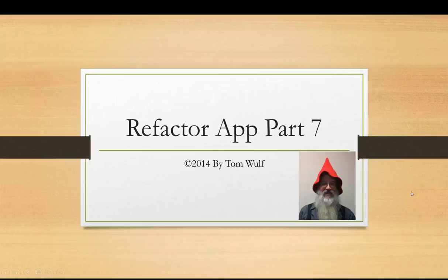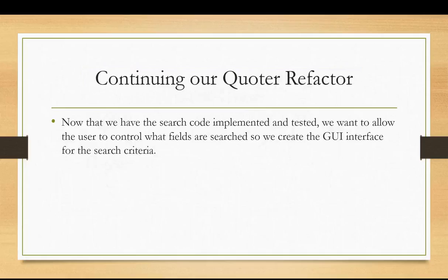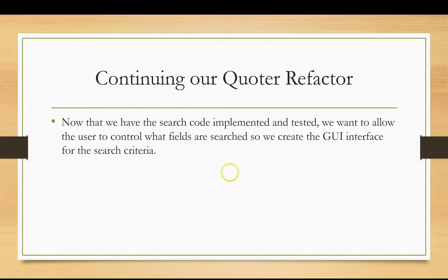In the last video we implemented our search and tested it to make sure everything worked. Now we're going to hook up the search to the graphical user interface. We'll have to create an interface for the user to indicate which parts of the quotes they want to search. We already have a place for them to type in the search criterion.